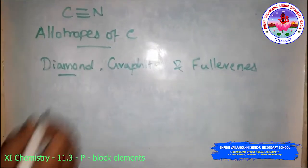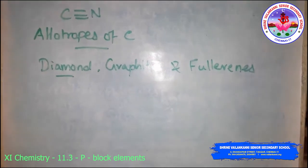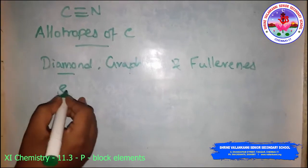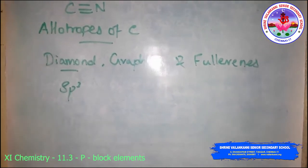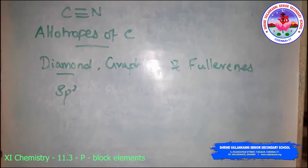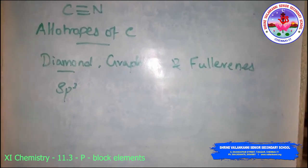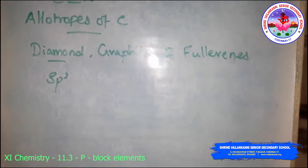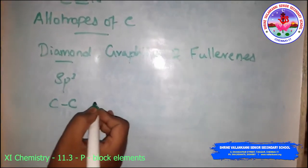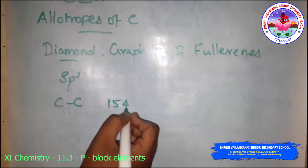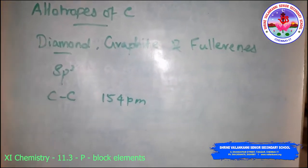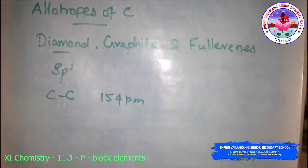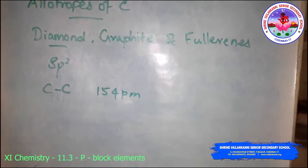Diamond is a crystalline lattice in which each carbon atom undergoes sp3 hybridization and is linked to four other carbon atoms using hybridized orbitals in a tetrahedral geometry. The carbon-carbon bond length is 154 picometers, and the structure extends through space to produce a rigid three-dimensional network of carbon atoms.